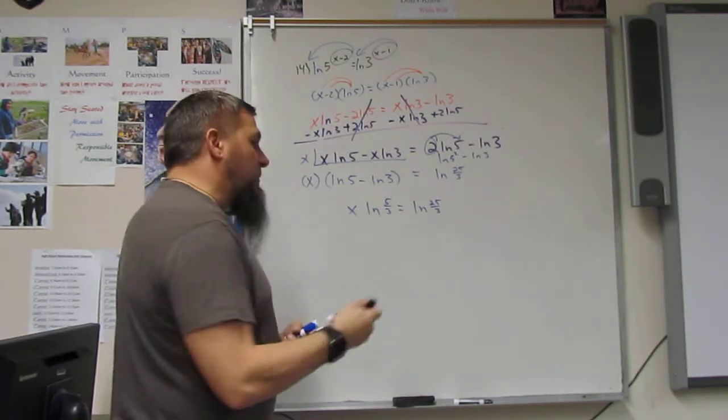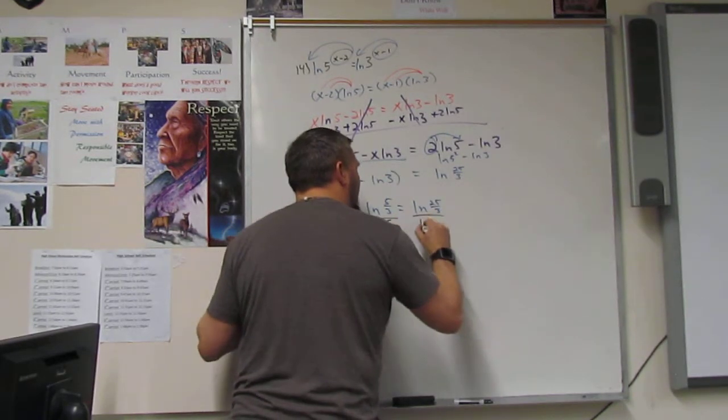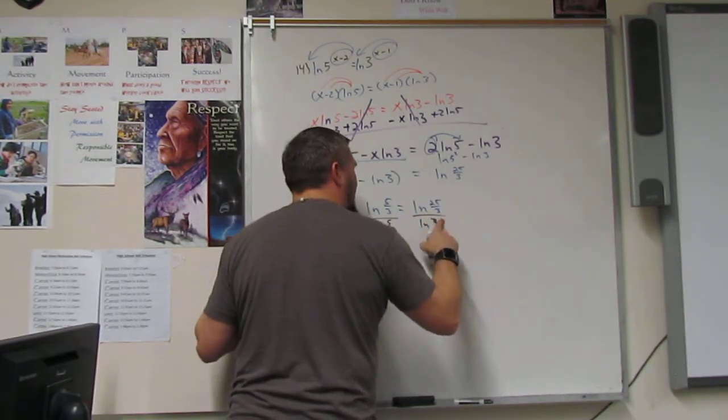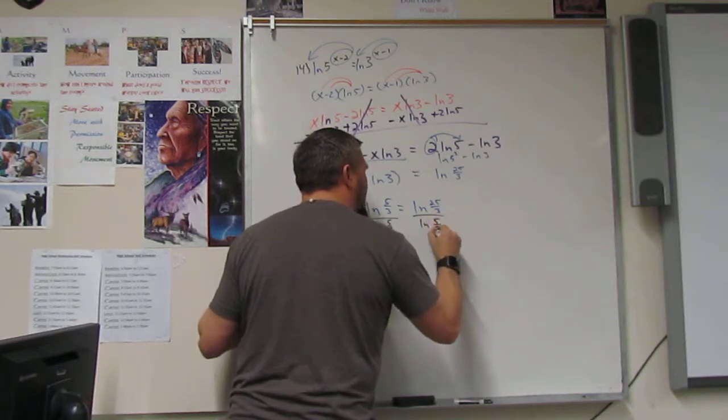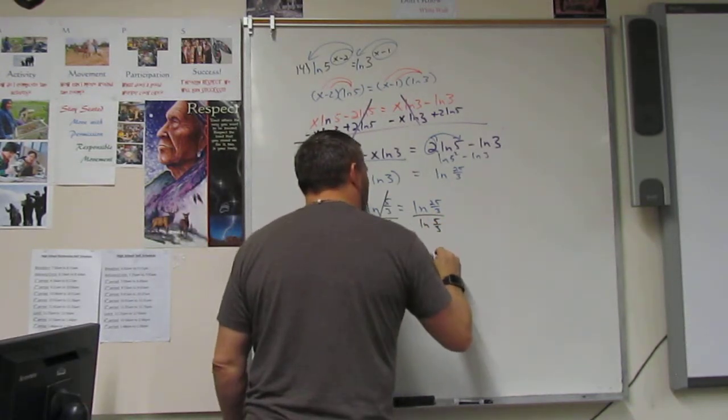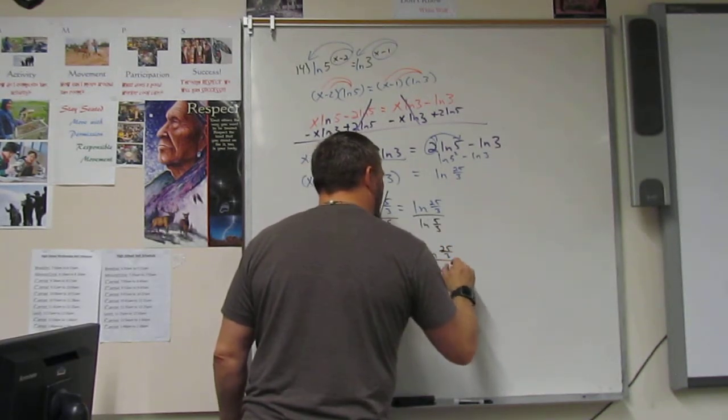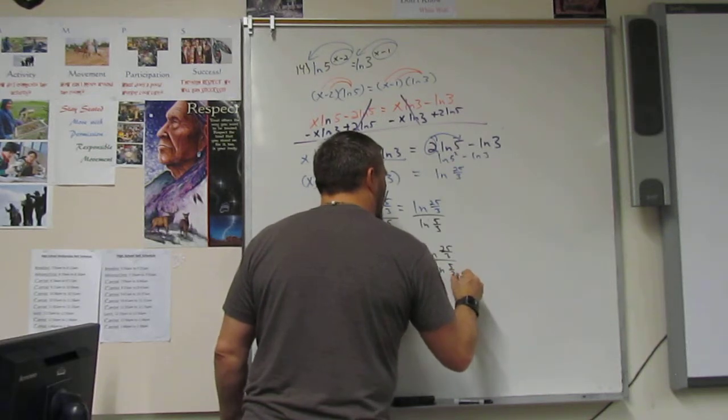And now I just divide both sides by ln 5 divided by 3. This cancels. I get x is equal to the ln of 25 over 3 divided by the ln of 5 over 3.